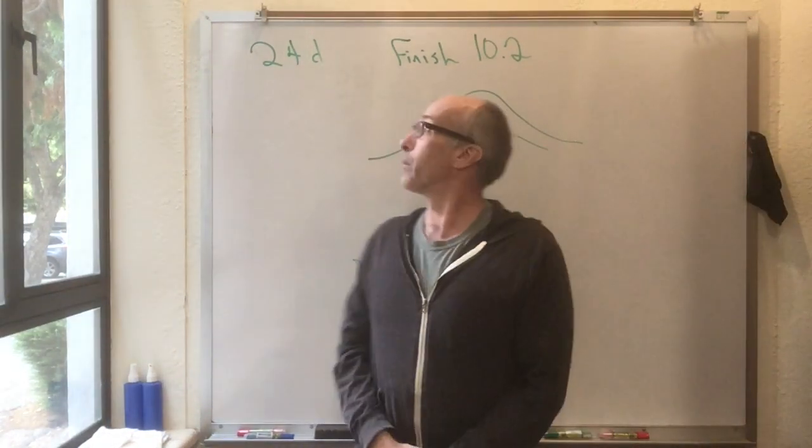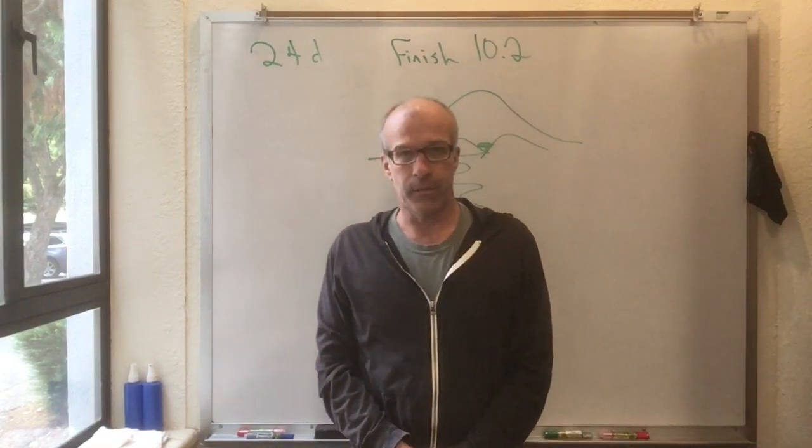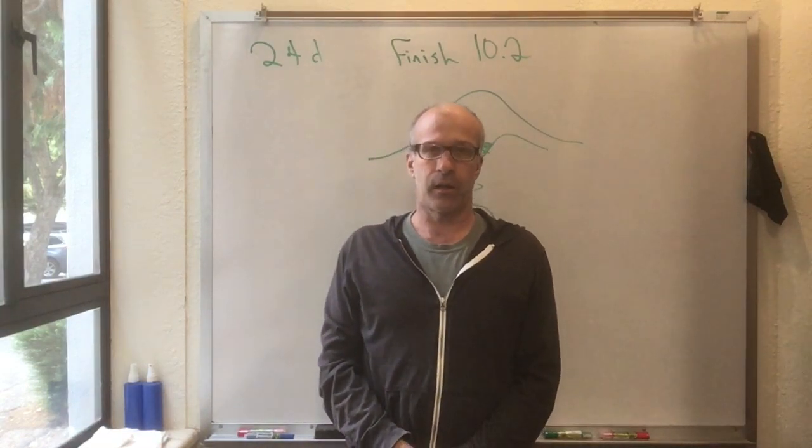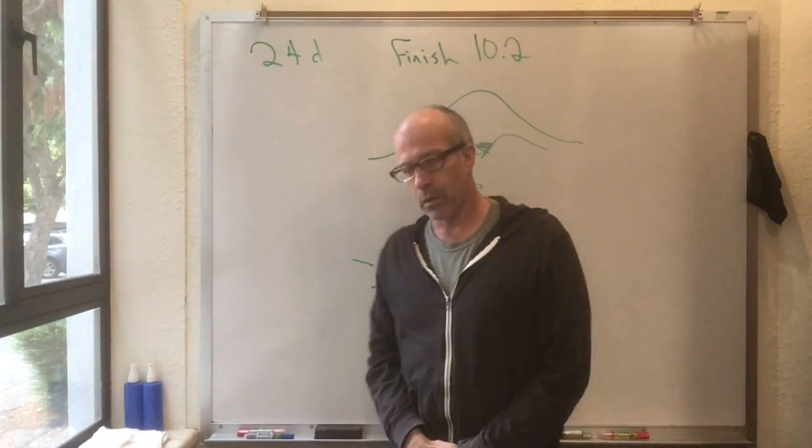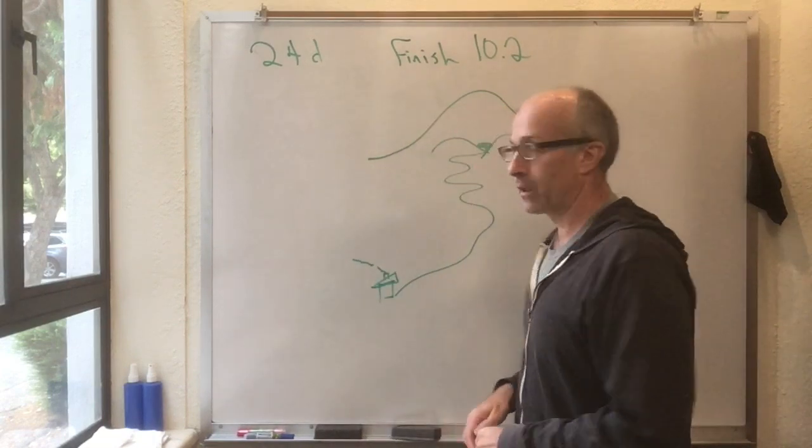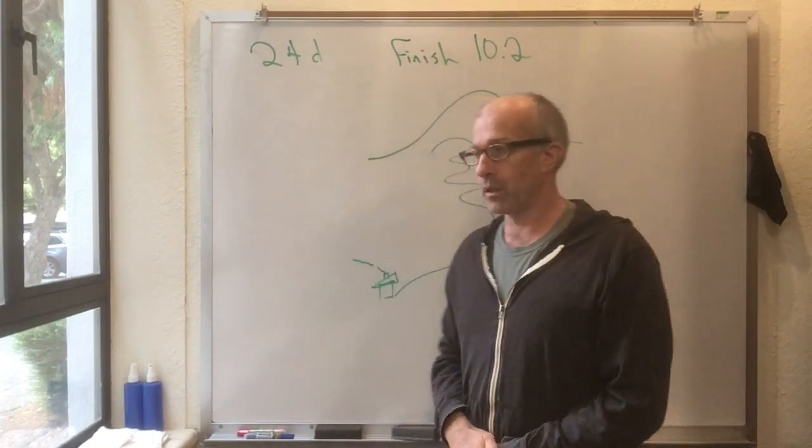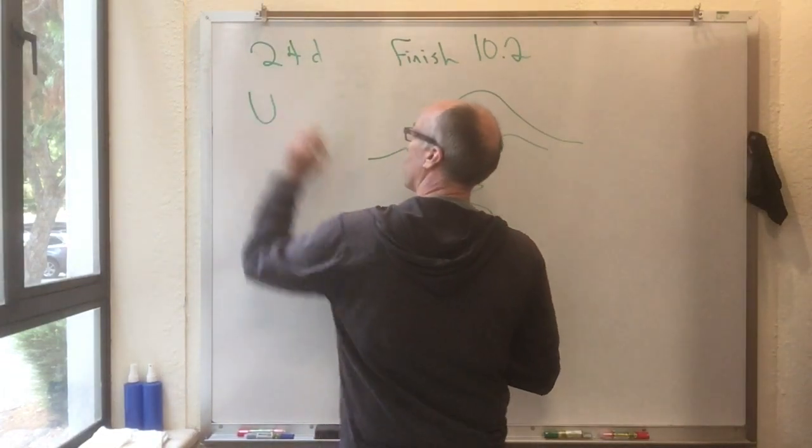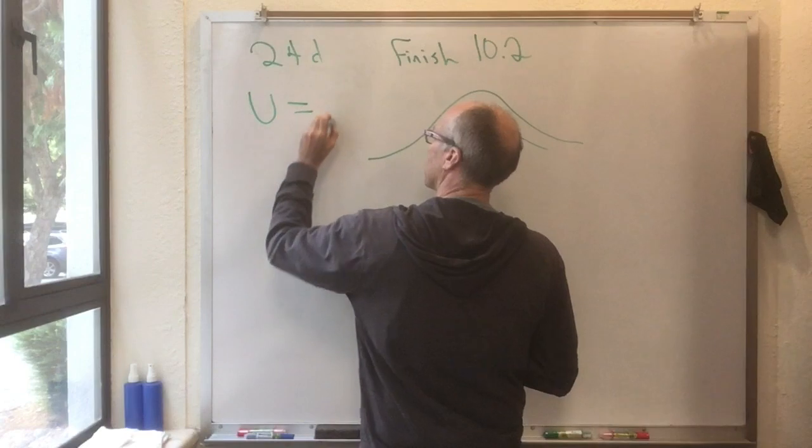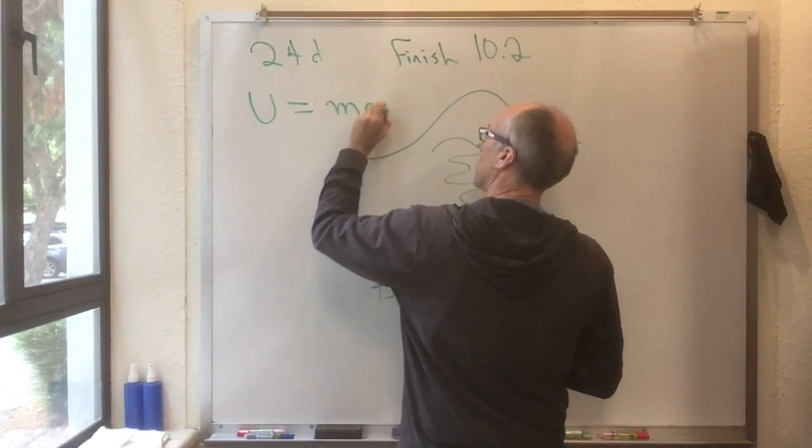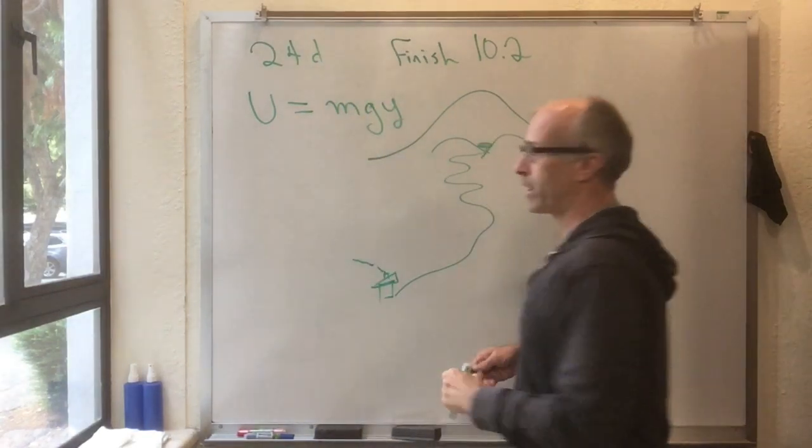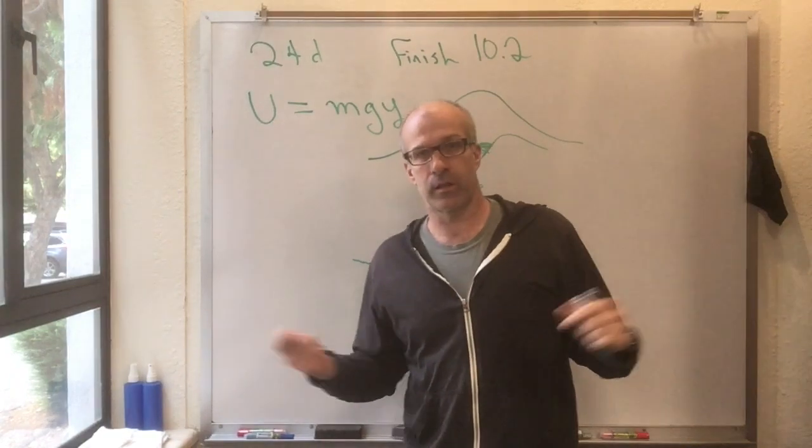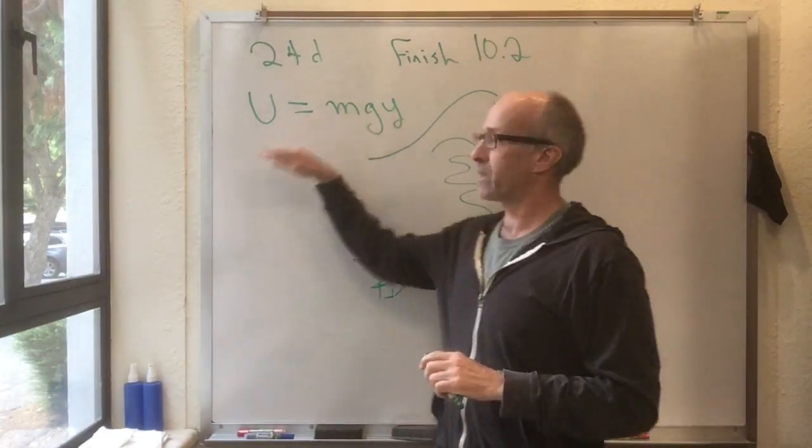This is flipped lecture number 24D, and I'm going to finish Knight section 10.2. So I already showed in Knight section 10.2 that the gravitational potential energy is mgy.